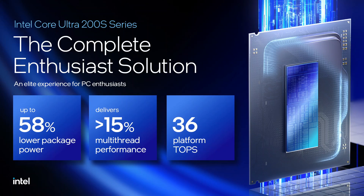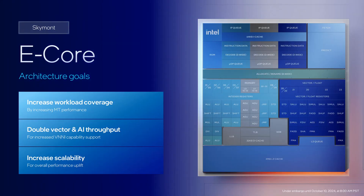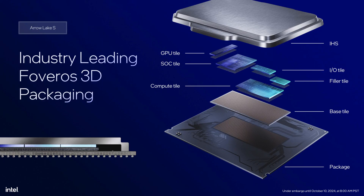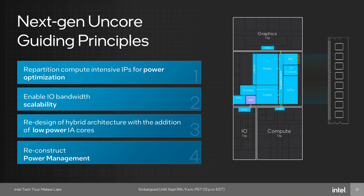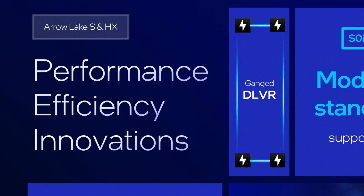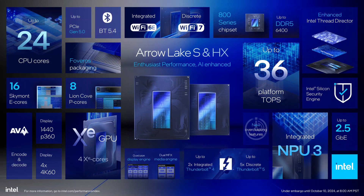Arrow Lake is Intel's revolutionary new processor for mainstream desktop, featuring new P-Cores and E-Cores, disaggregated tile-based 3D Foveros packaging, an integrated NPU for AI acceleration, a next-generation UnCore, DLVR Power Rails, and so much more.